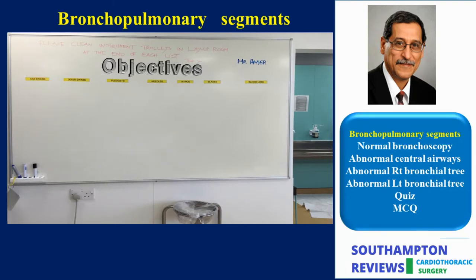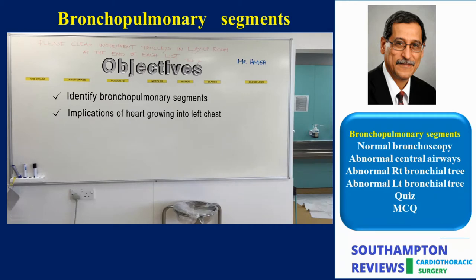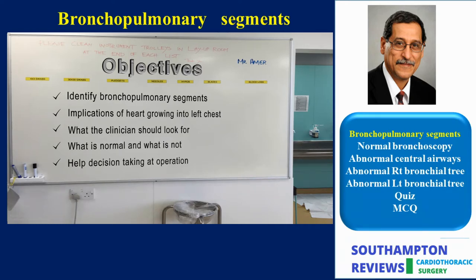The objective of this video is to show you in an easy and logical way how to identify the bronchopulmonary segmental divisions at bronchoscopy. In addition, I aim to explain the implications of the heart growing into the left chest. I will show what the operator should look for, what is normal and what is abnormal, to help decision-taking in the operative and perioperative period.